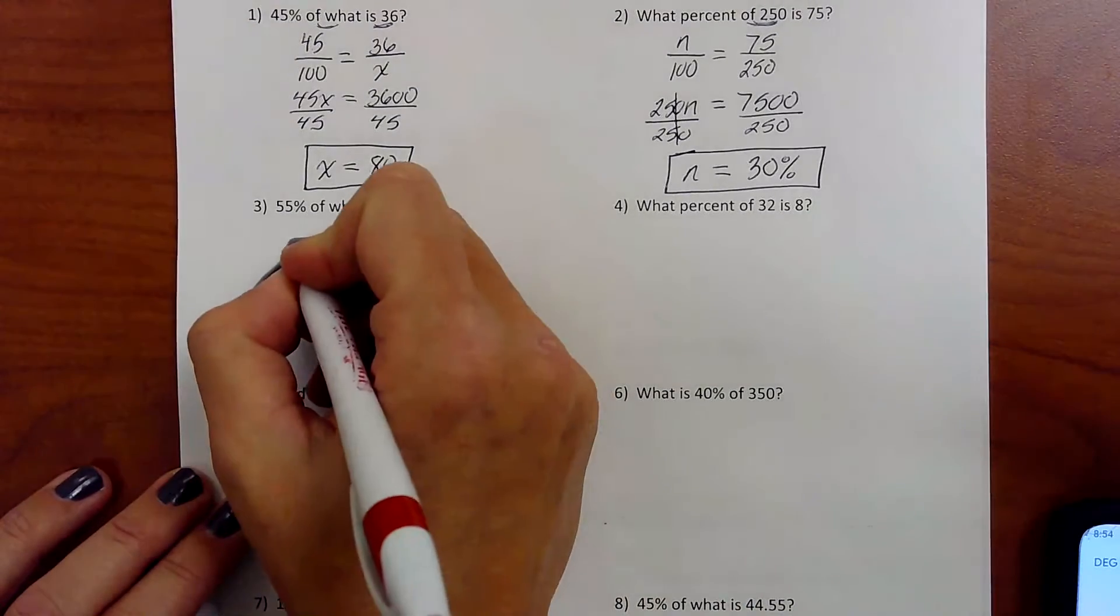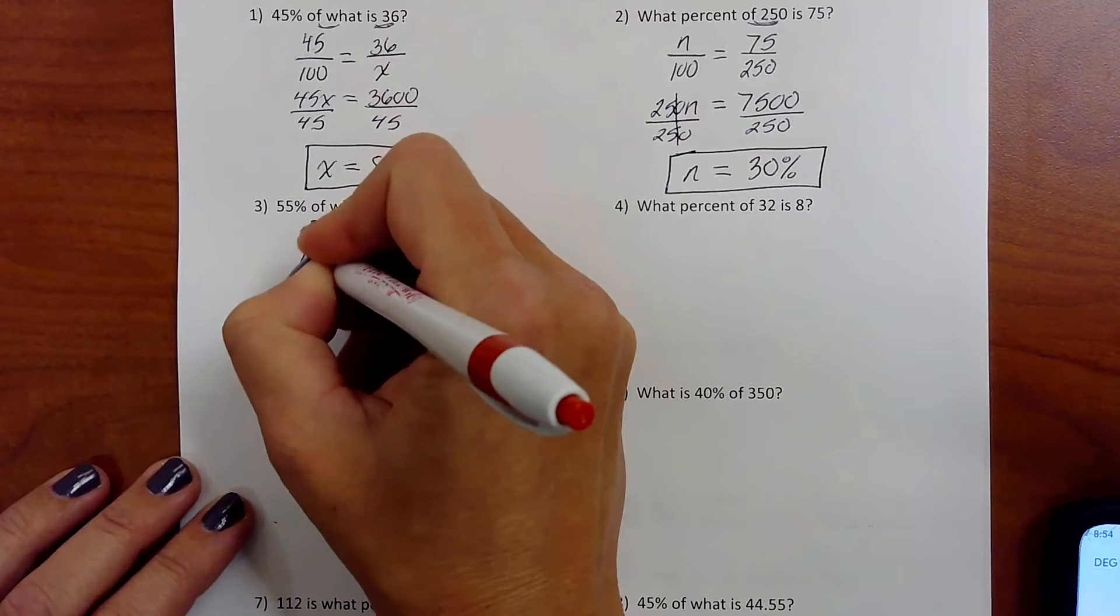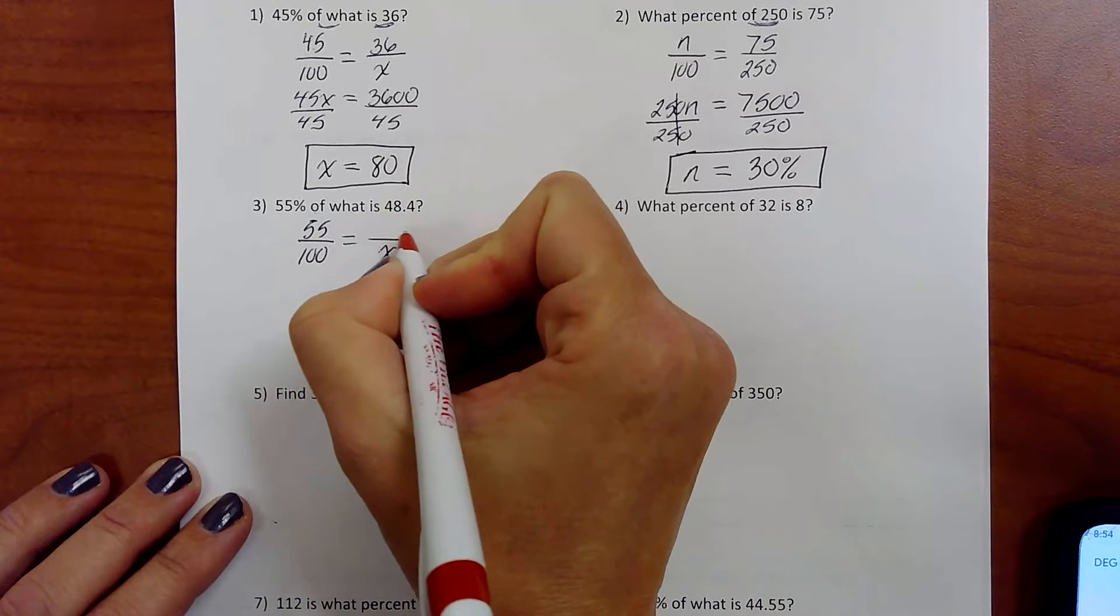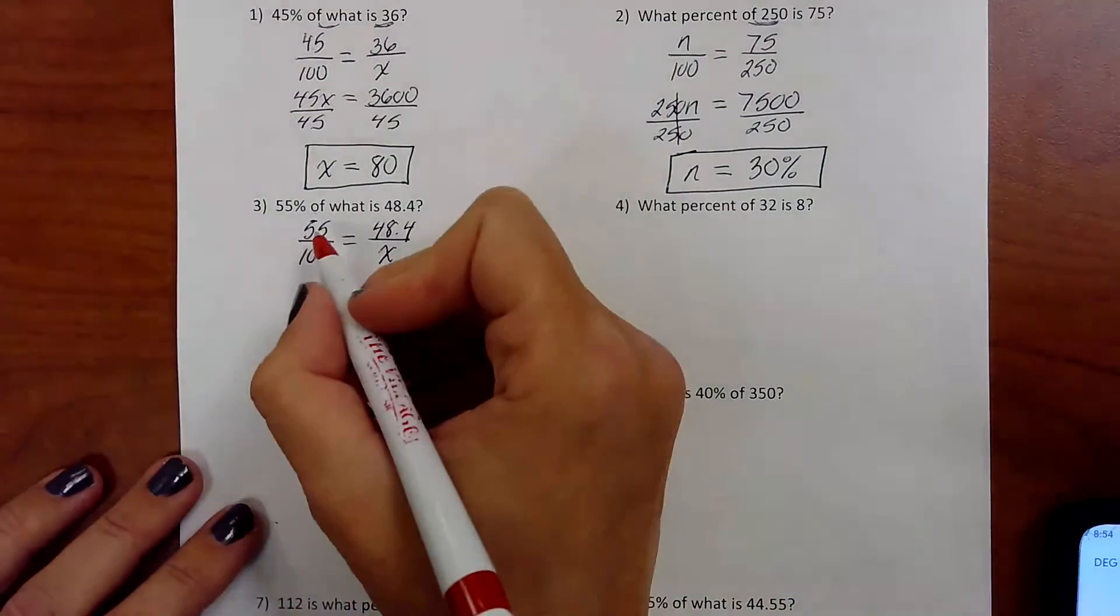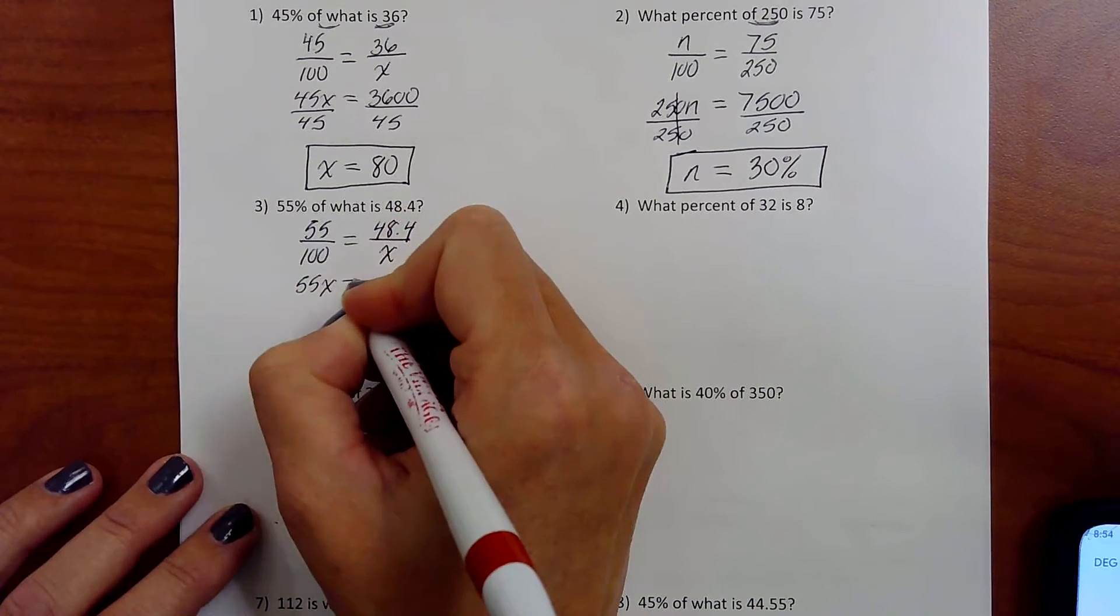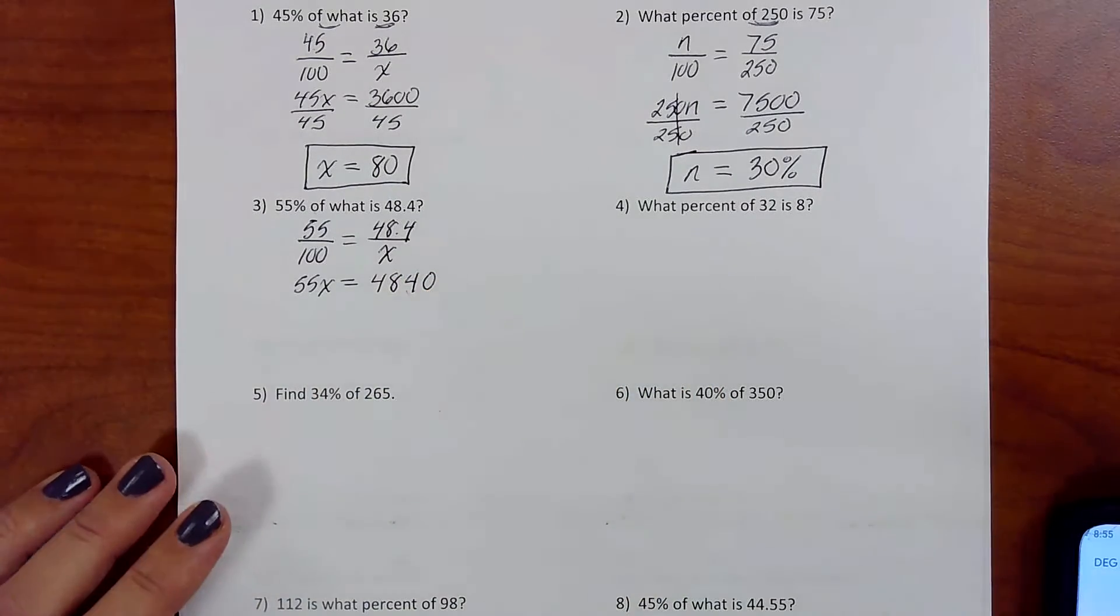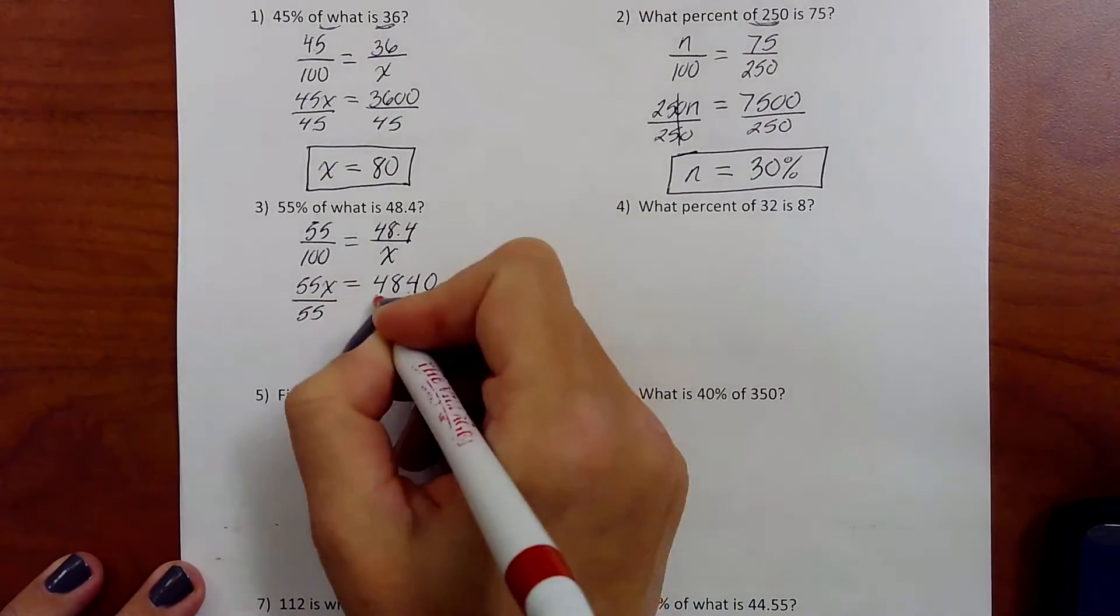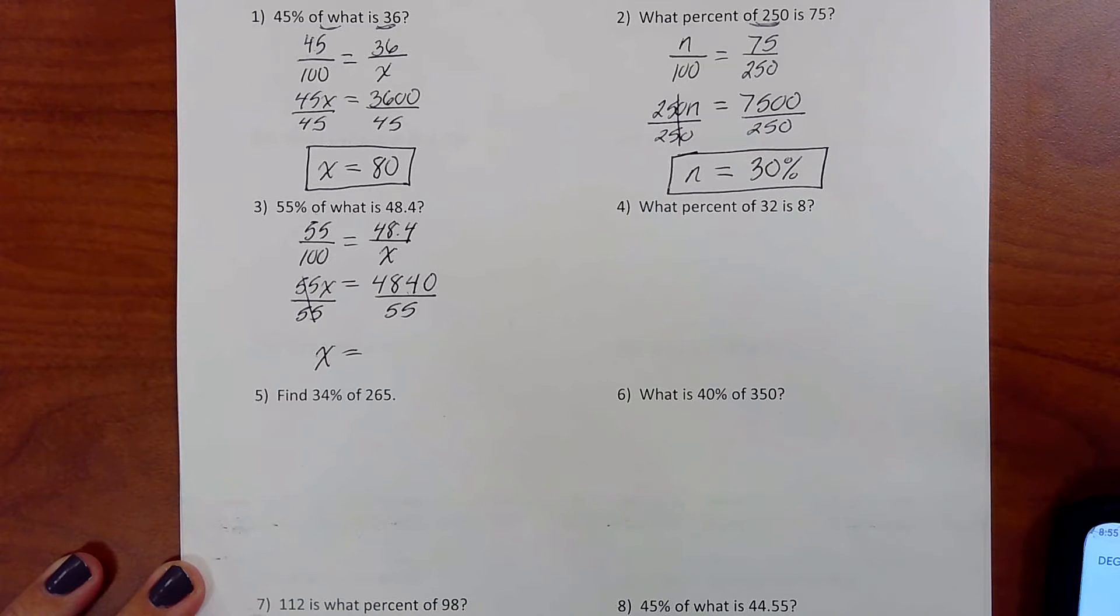All right. Number three. 55 percent of what is 48.4? All right. 55 over 100. Of what? We don't know what's with what. Is 48.4. So 48.4 is on top. All right. 55 times x. 55x. 100 times 48.4. That means you move the decimal twice to the right. So there you go. How would you get x by itself? You're going to divide by 55. And then use your calculator. 4840 divided by 55. 88.